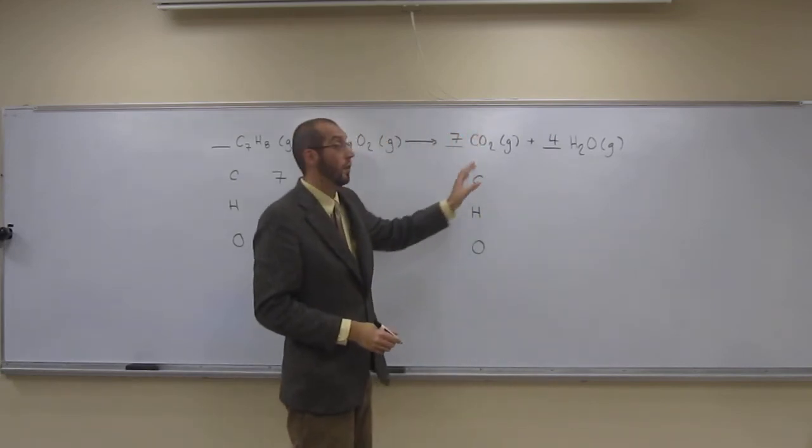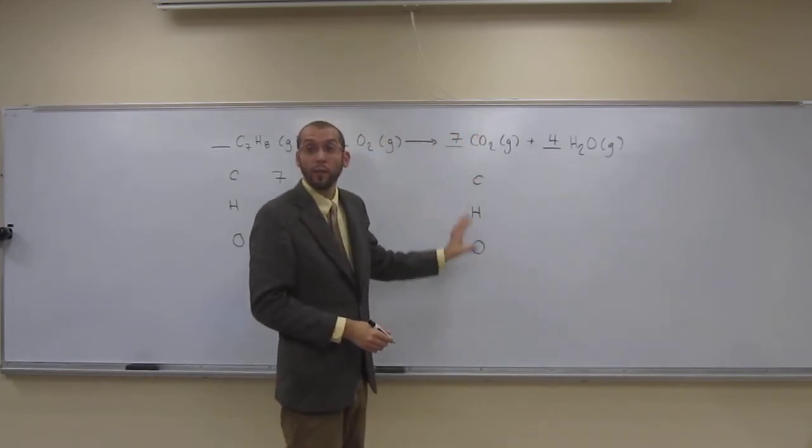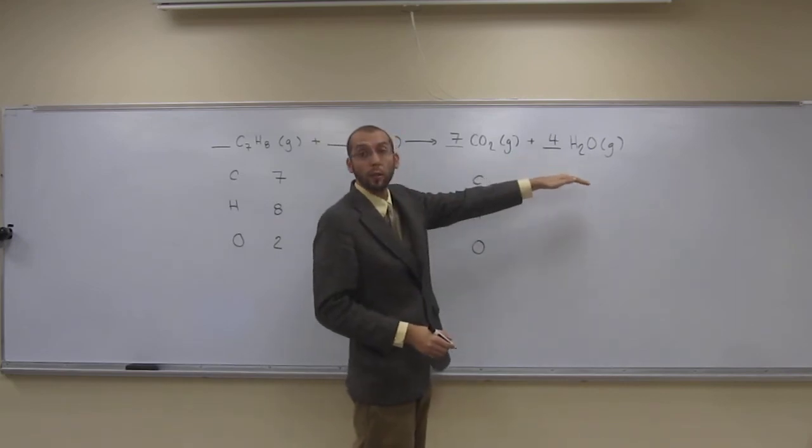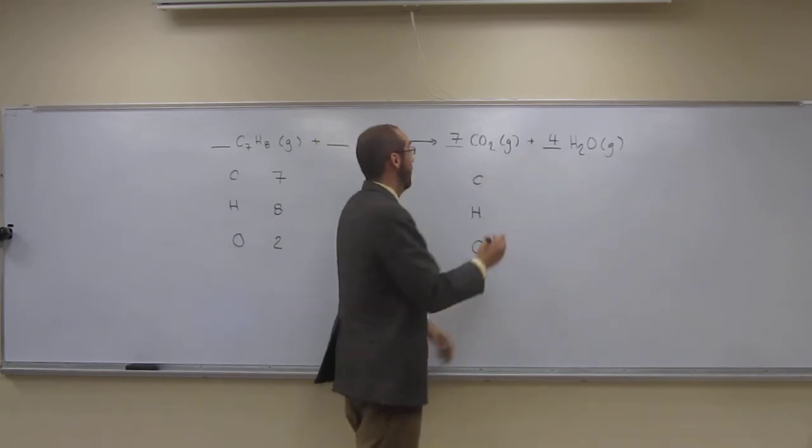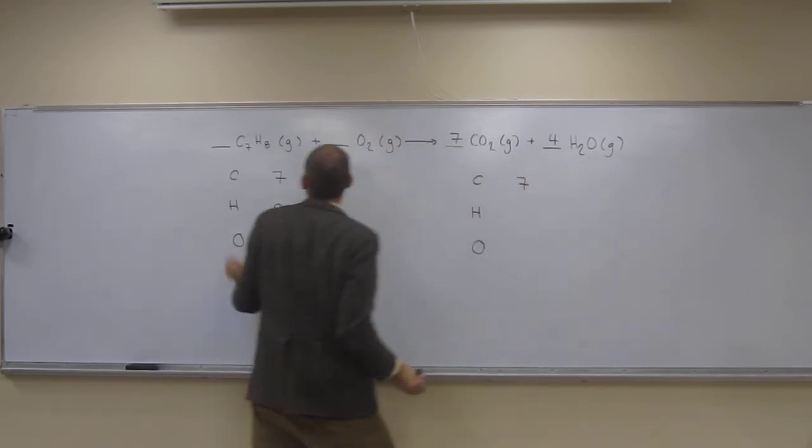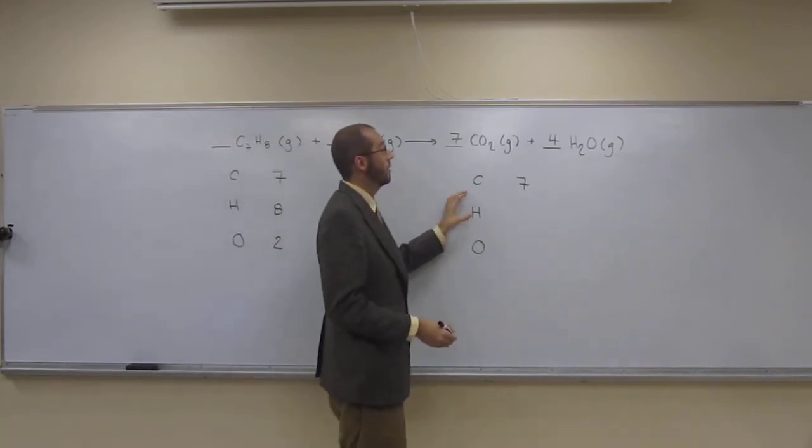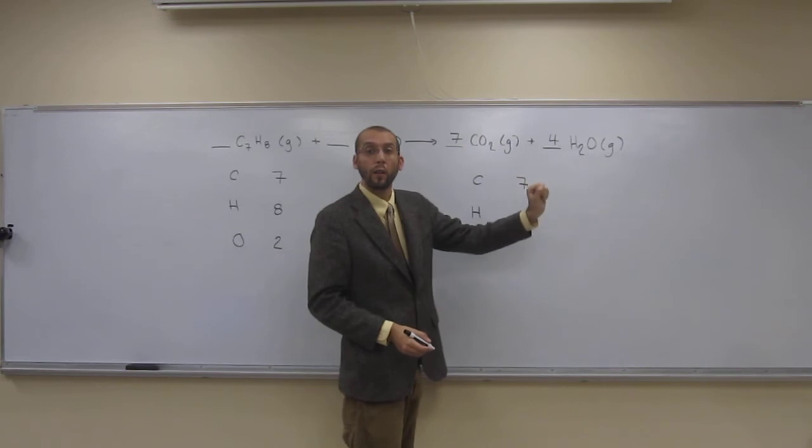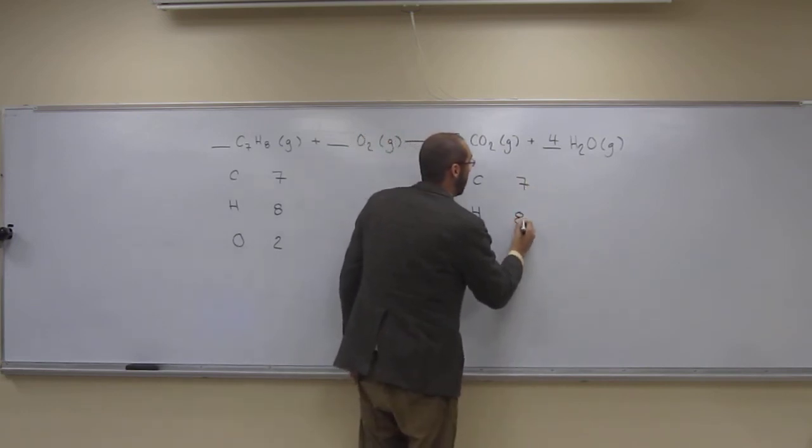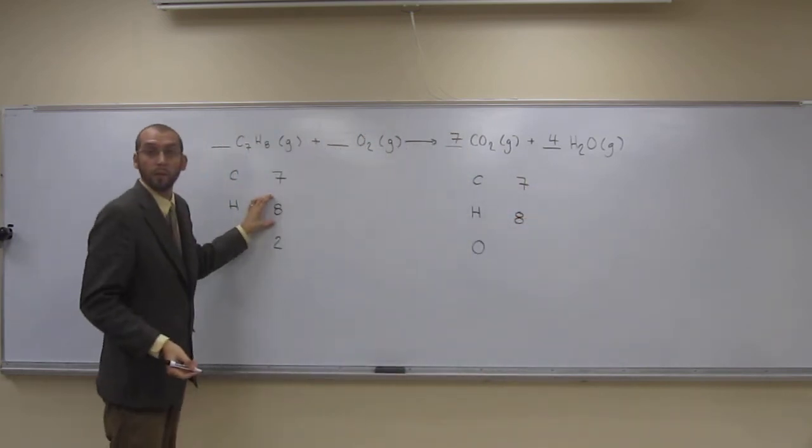Okay. So, now let's balance our carbons and hydrogens. See if we have this right amount. So, how many carbons all together do we have on this side? Seven. So, that's the same as over here, right? How many hydrogens do we have all together over here? Eight. So, that's the same as over here, right?